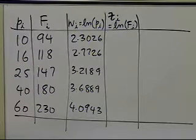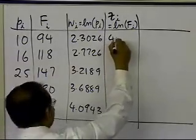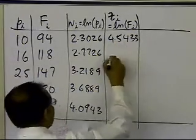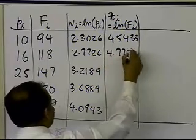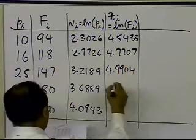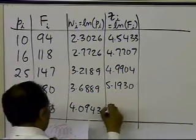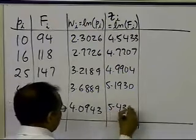This is basically taking each individual flow rate number and taking the natural log of those numbers to generate the z values, which are 4.5433, 4.7707, 4.9904, 5.1930, and 5.4381.